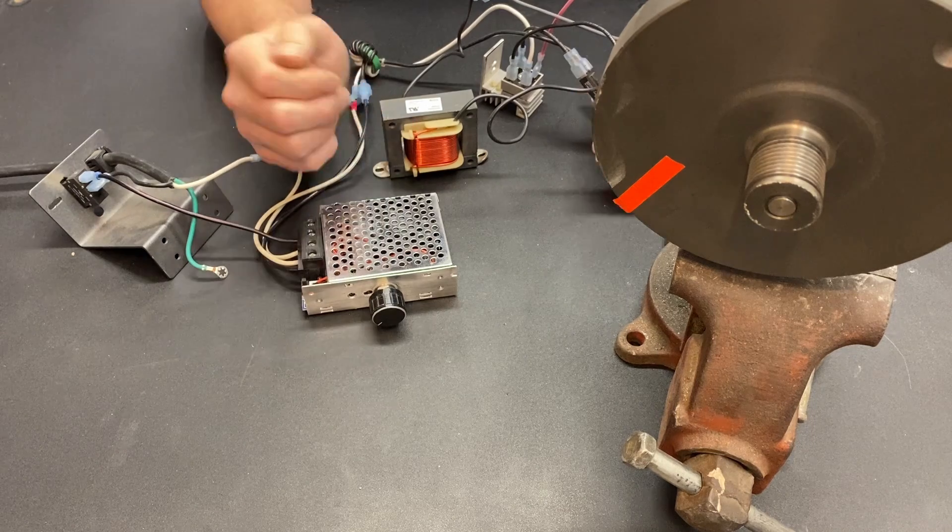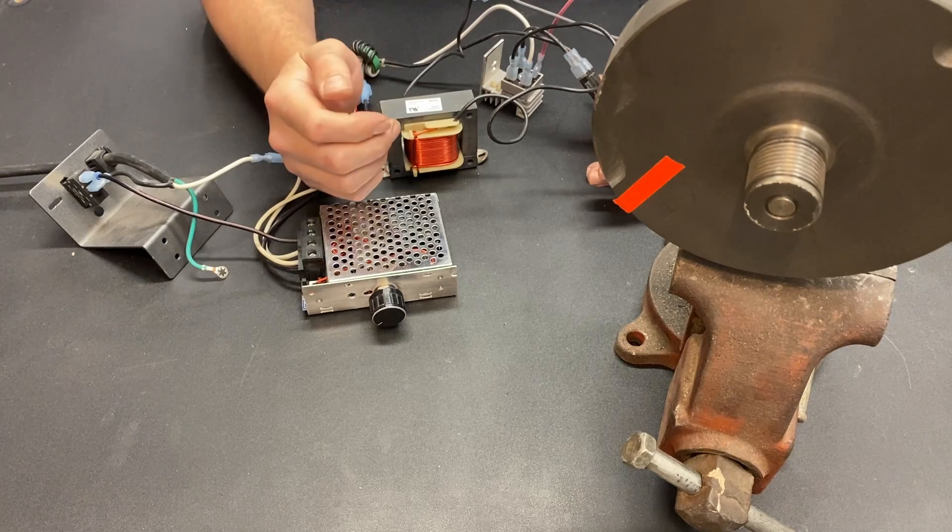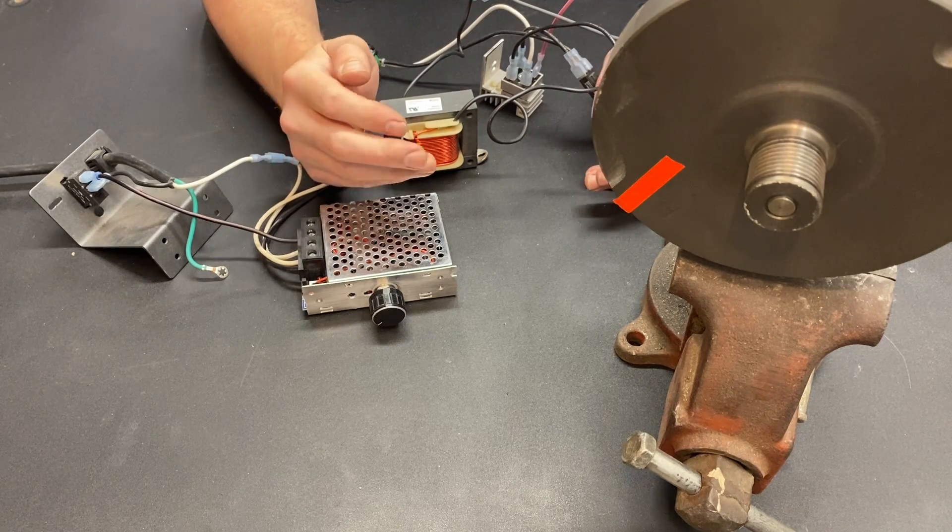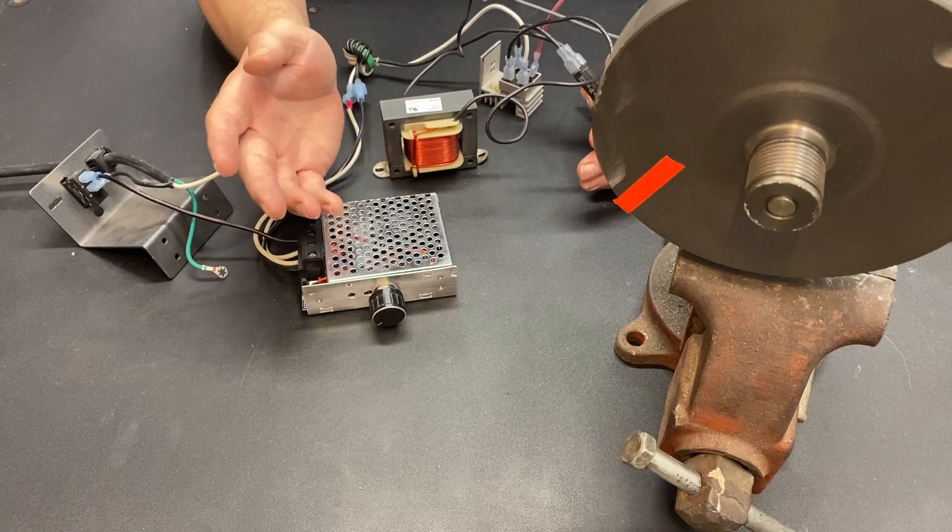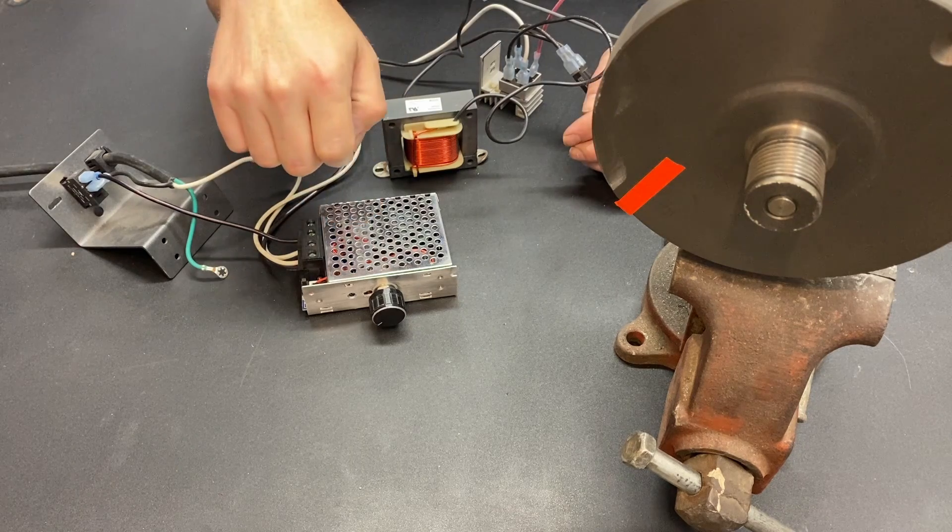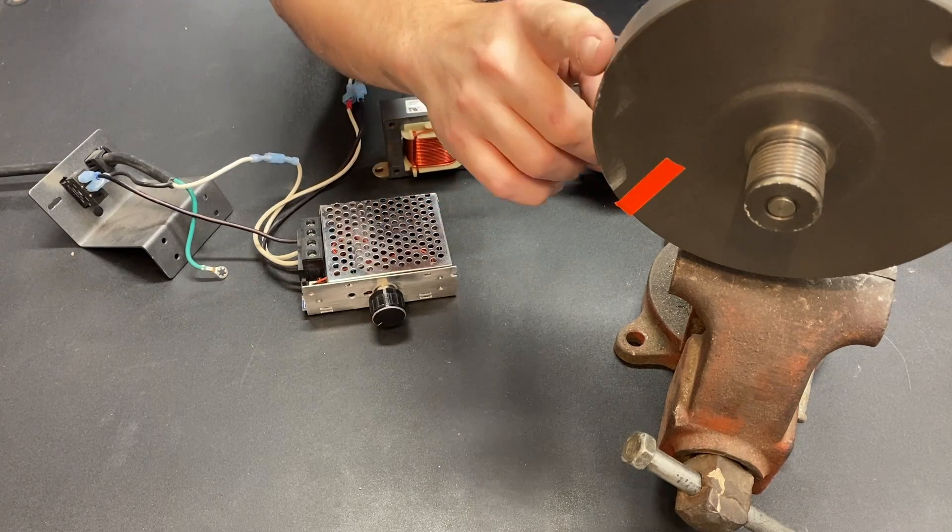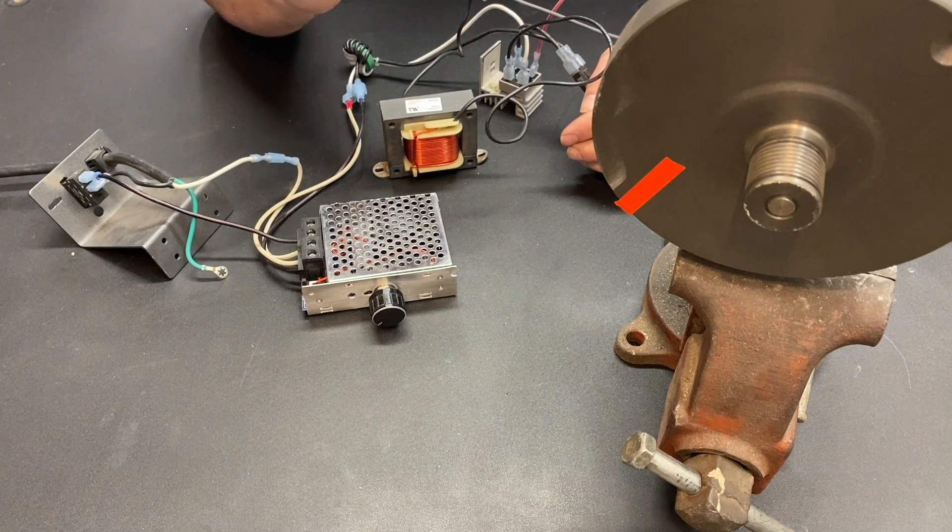A discussion came up on the Facebook Mill Lathe Combo Machine page about adding a brake to your lathe, and some talked about using a bicycle brake on the motor and some talked about putting a brake on the spindle itself. I'm here to show you that if you've converted your lathe to a treadmill motor, it technically comes with a brake.